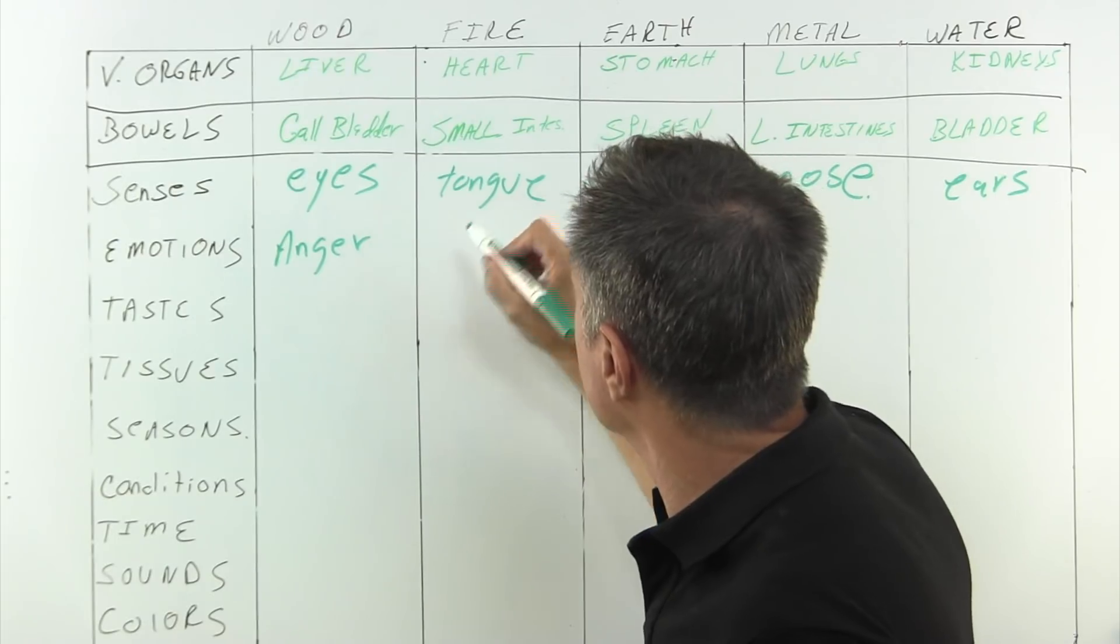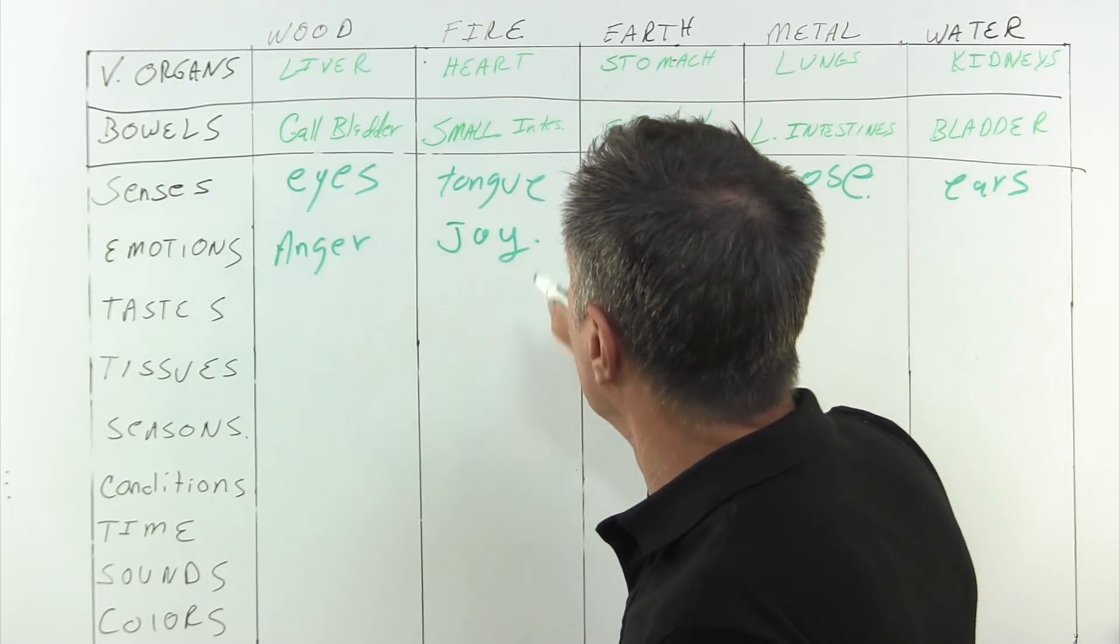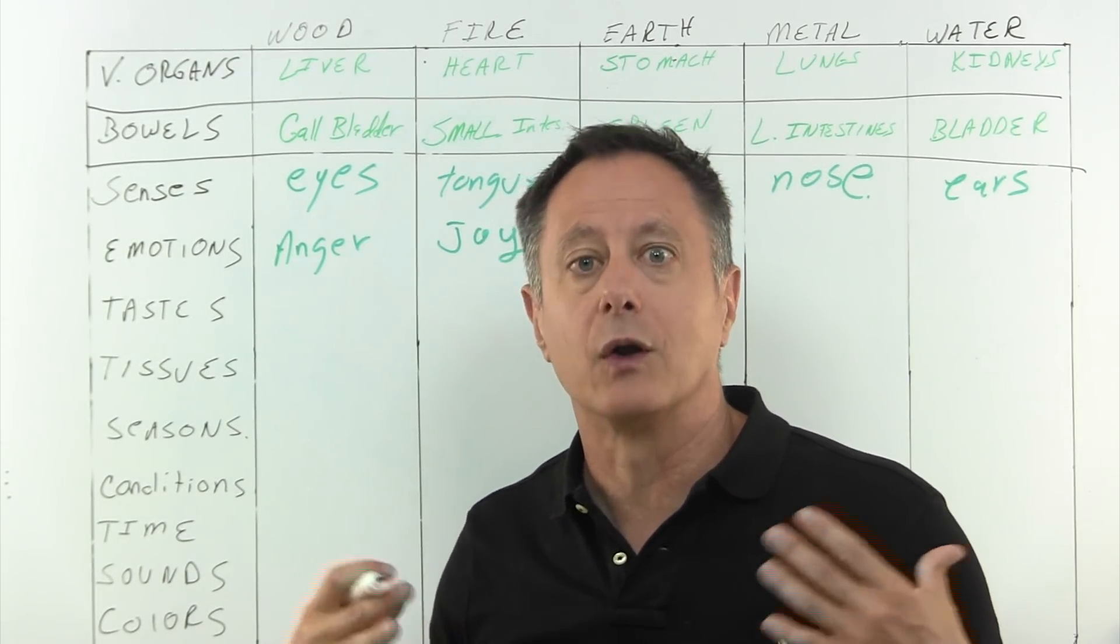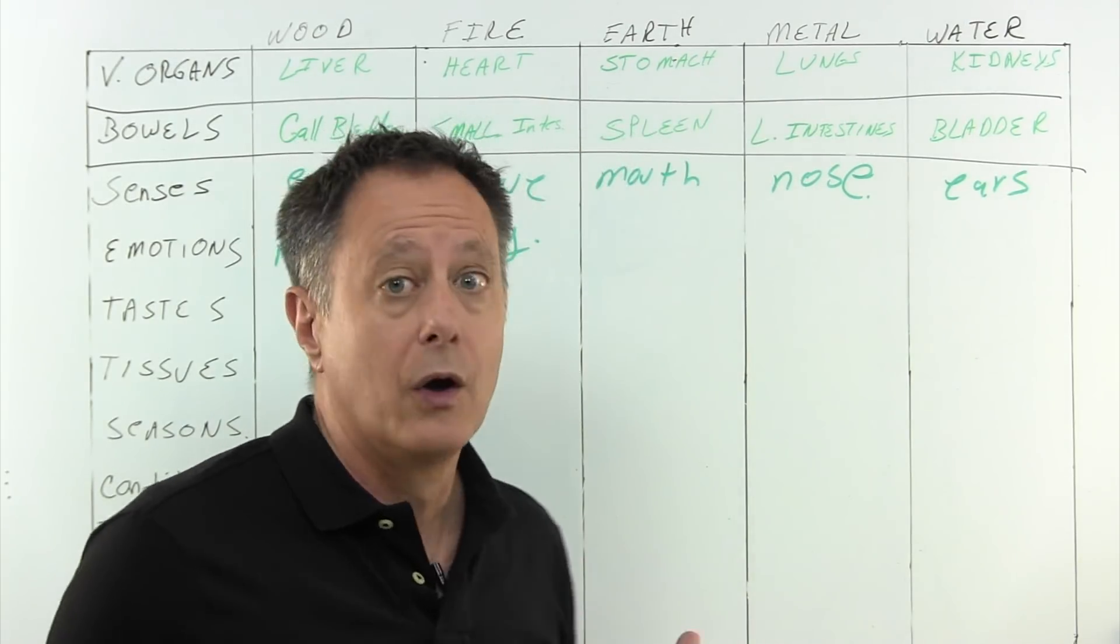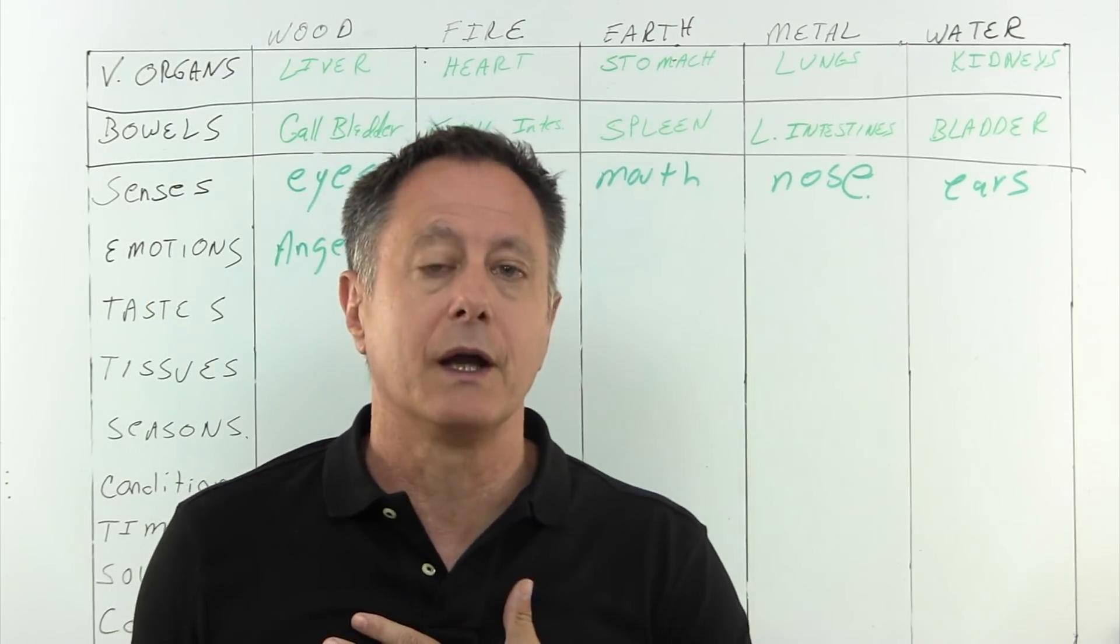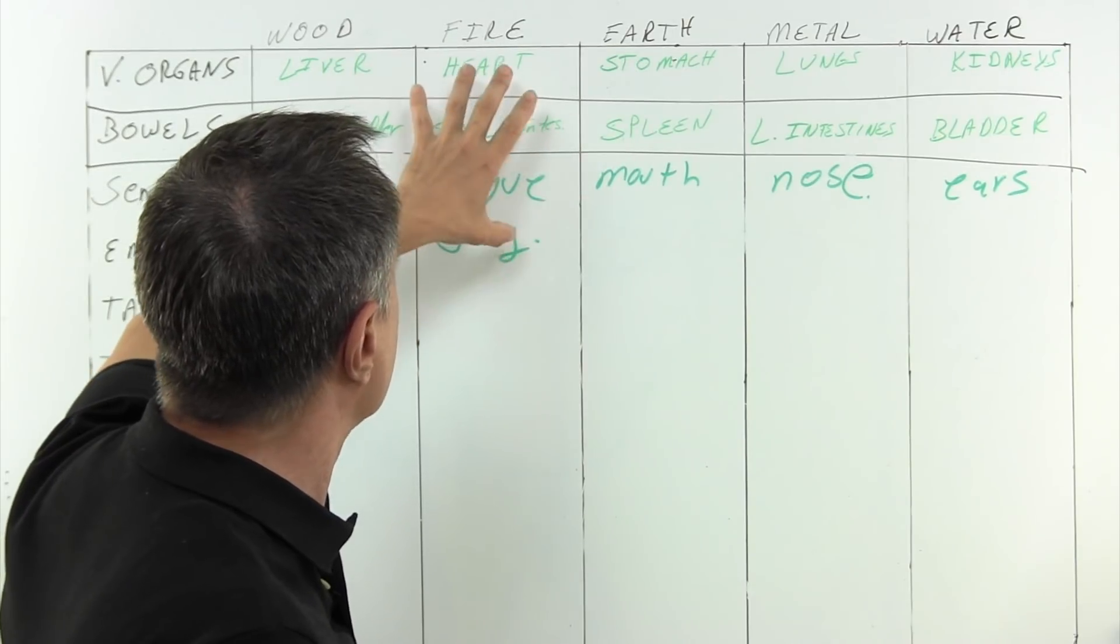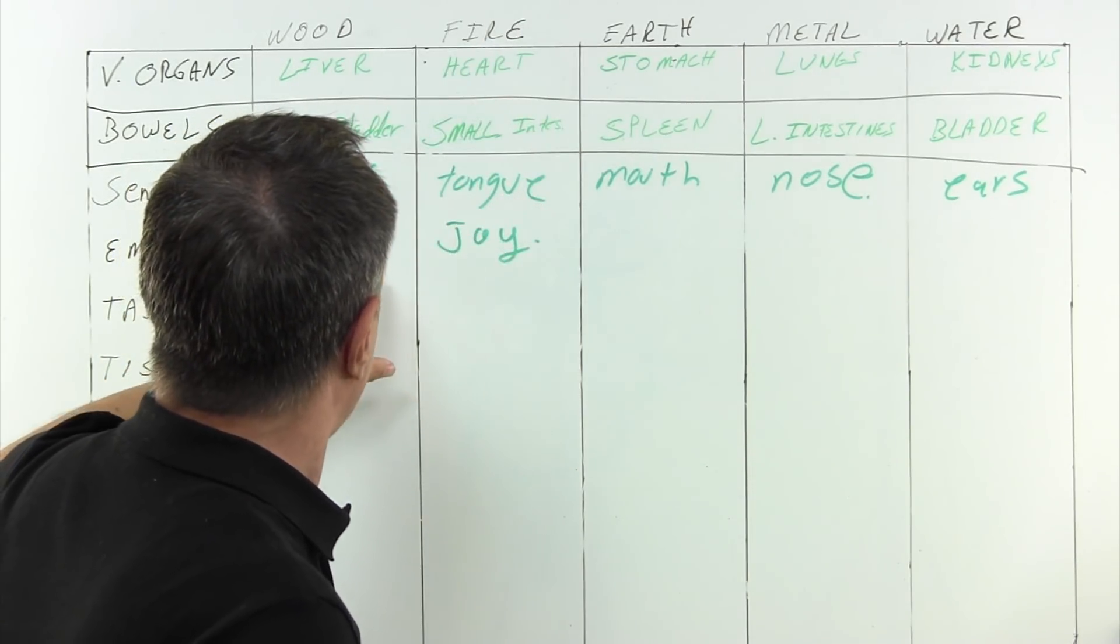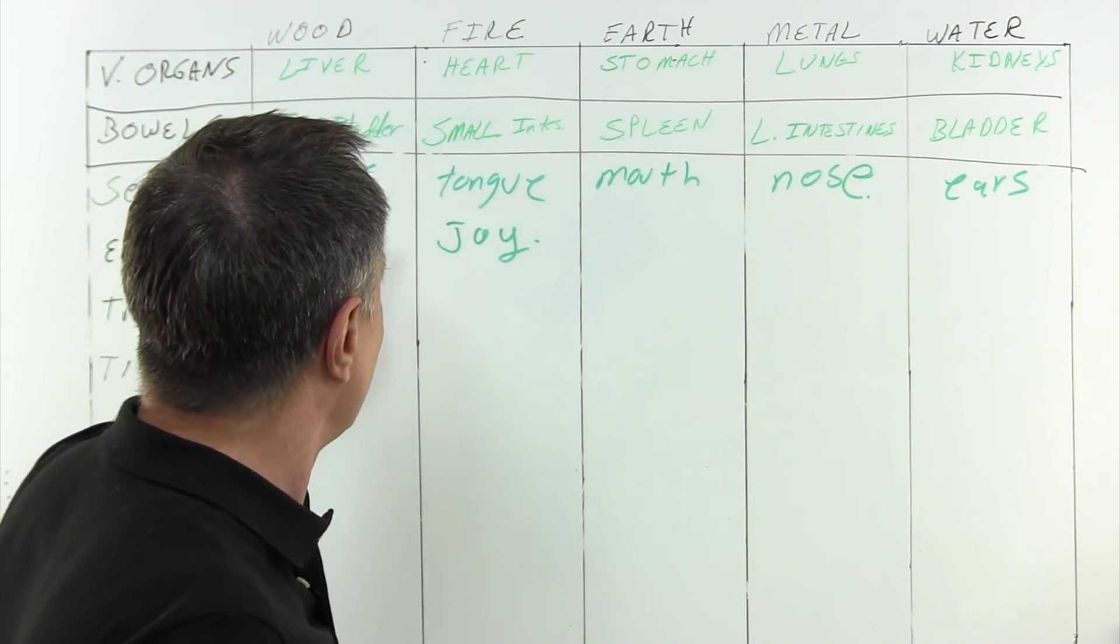Similarly, other emotions map here. Fire is related to joy. And we sort of know some of these things instinctively, even though they're in our language, they're in our culture without really realizing it. You know, oh, I'm so happy for you, right? What do I do? I put my hand on my chest. I put my hand over my heart. I'm so happy for you. Why? Because joy is mapped to the heart. It's mapped to the element of fire. Anger, that guy really gets my gall, right? It's in our language.